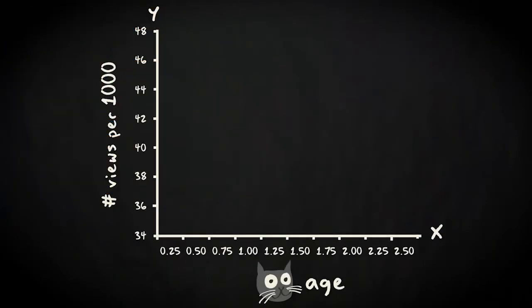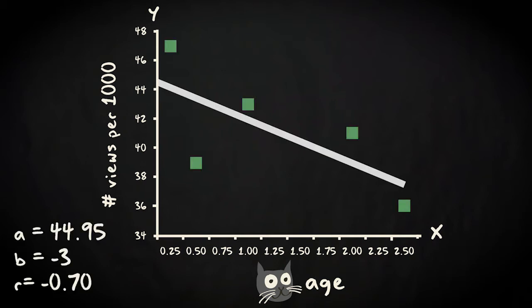Consider the example where we predicted popularity of cat videos represented by the number of video views, using the cat's age as the predictor. We hypothesized that videos of younger cats will be more popular. Suppose we collected some data and calculated the intercept and regression coefficient.